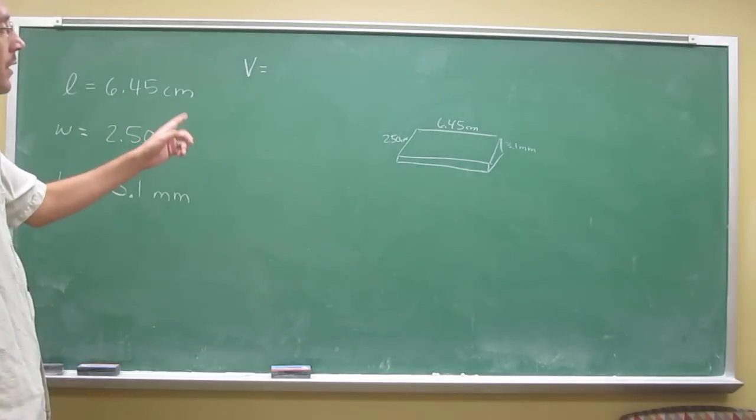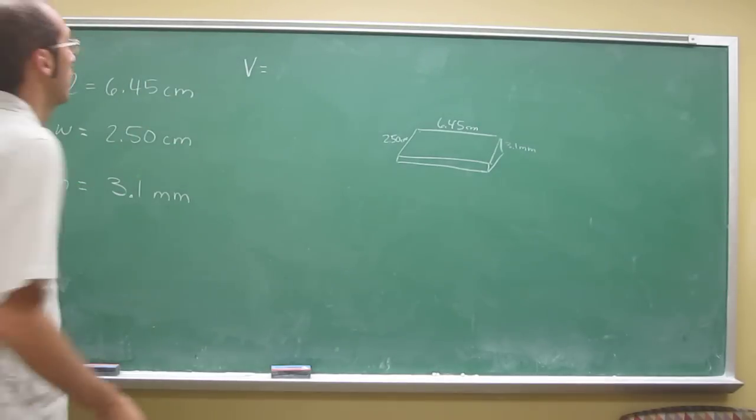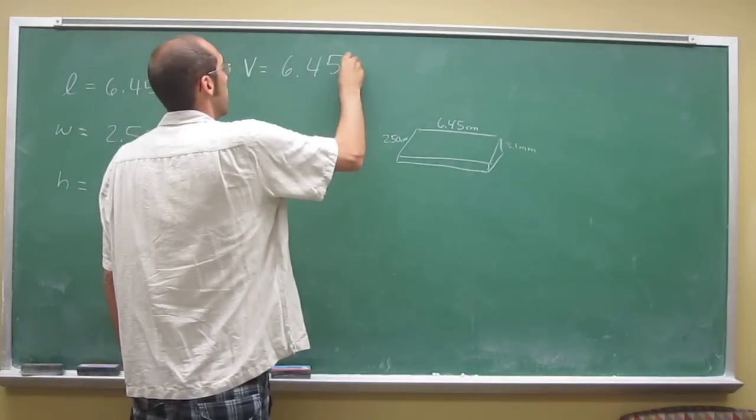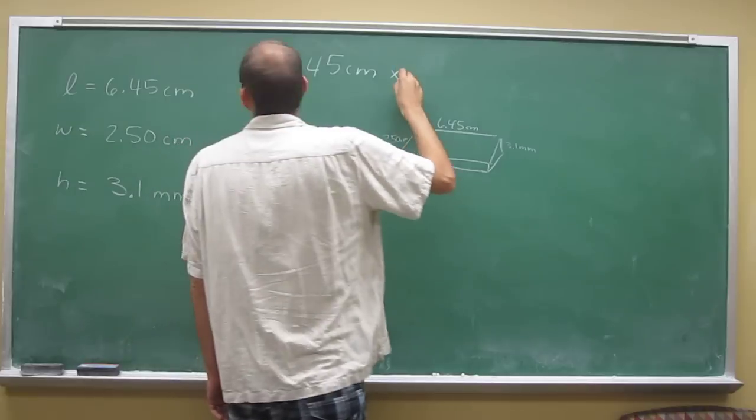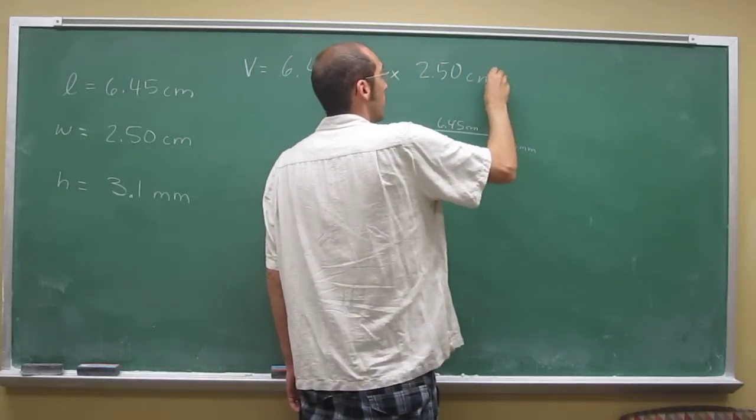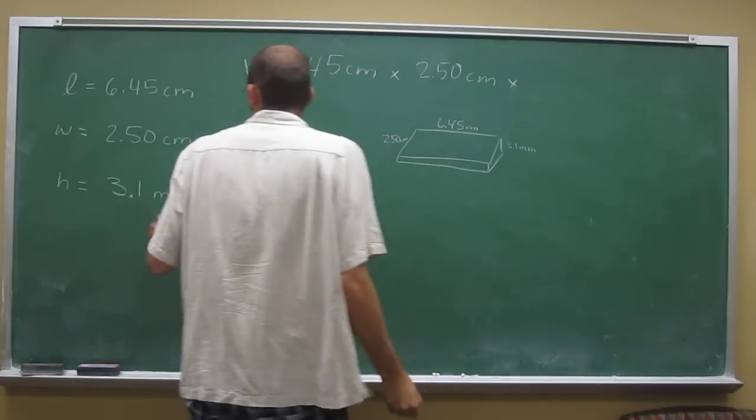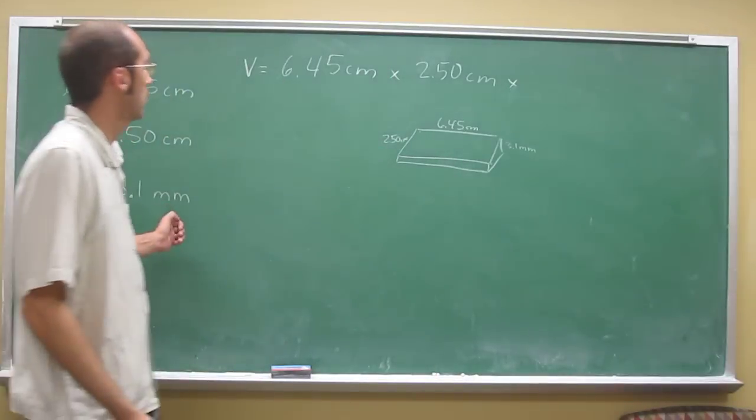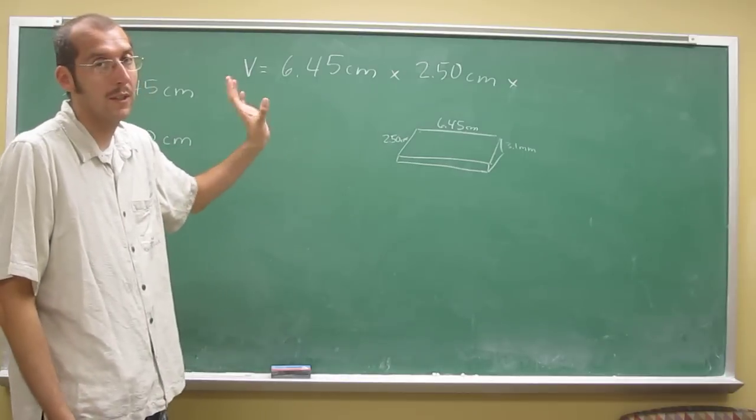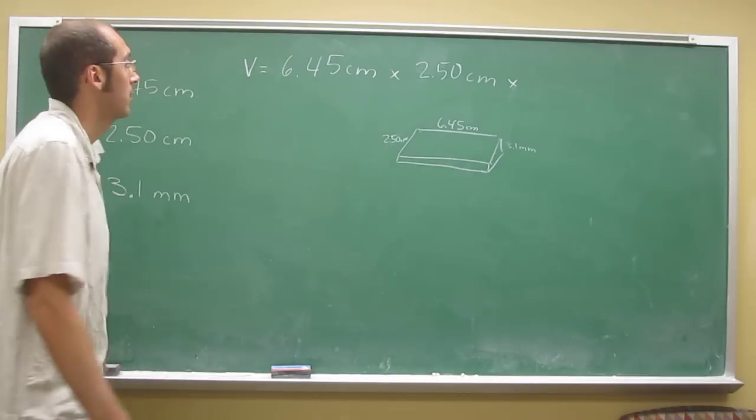The volume is actually the length times the width times the height. So 6.45 centimeters times 2.50 centimeters times—if you just put your millimeters in there, your units would be centimeters squared times millimeters. Those are not good units.